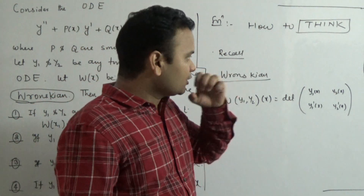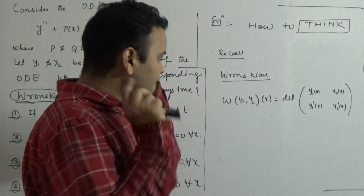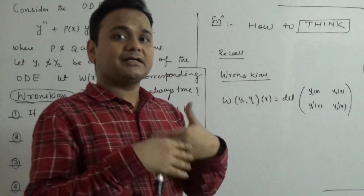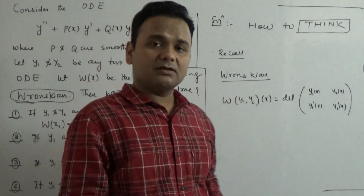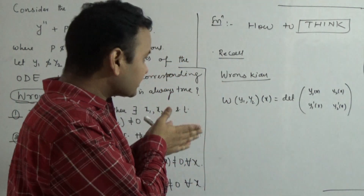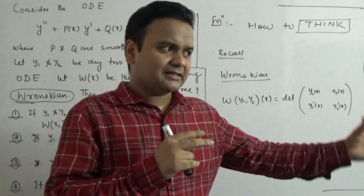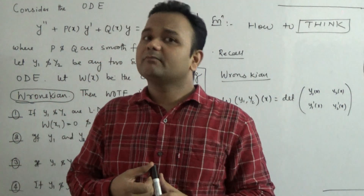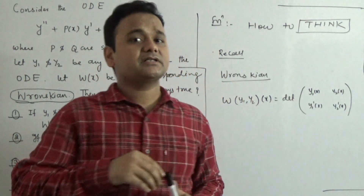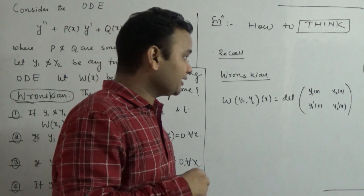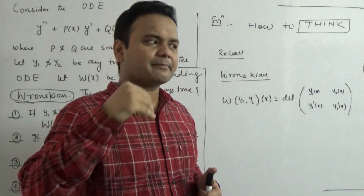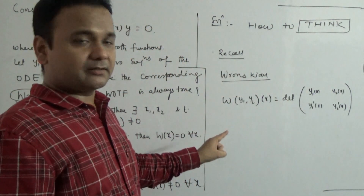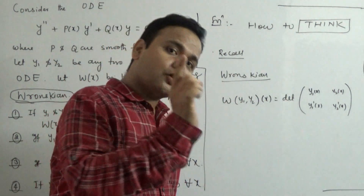These are the basic things you need to know about the Wronskian. The most important property is: given the Wronskian, can you tell whether y1 and y2 are linearly independent? In general this is not straightforward — there are functions that are linearly independent but whose Wronskian is zero. However, in the ordinary differential equation setting, when you look at the Wronskian of solutions, there is a theorem: the Wronskian is either identically zero or never equal to zero.